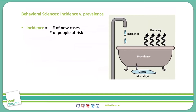If you look at this picture on the right, this is a great explanation of how this works. Incidence is just like a faucet — it's the new water coming into the faucet and filling up the bathtub. It has nothing to do with anything that's already in the bathtub or things still in the pipe. It's the new water coming in and starting to increase the volume of the bathtub.